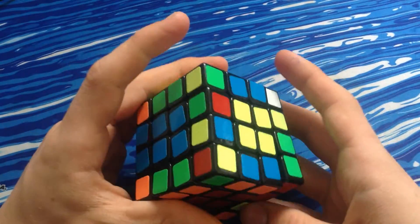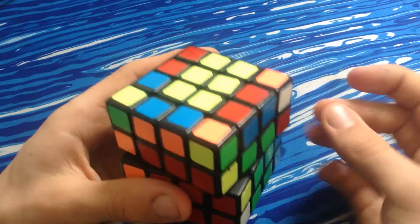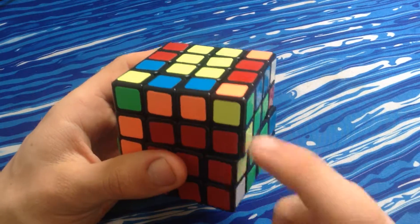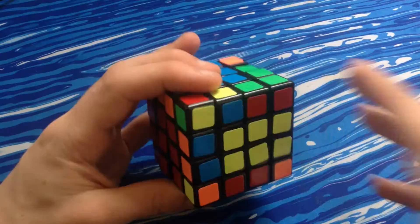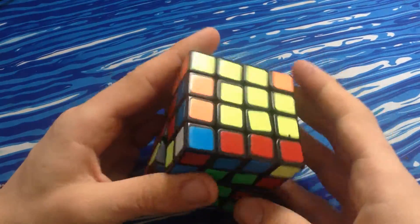I insert this edge, insert this edge, do a U prime, solve it, and insert the edge that has the red-white, red, yellow-red there, solve it. And then I just insert this edge and do the thing with the last two edges.